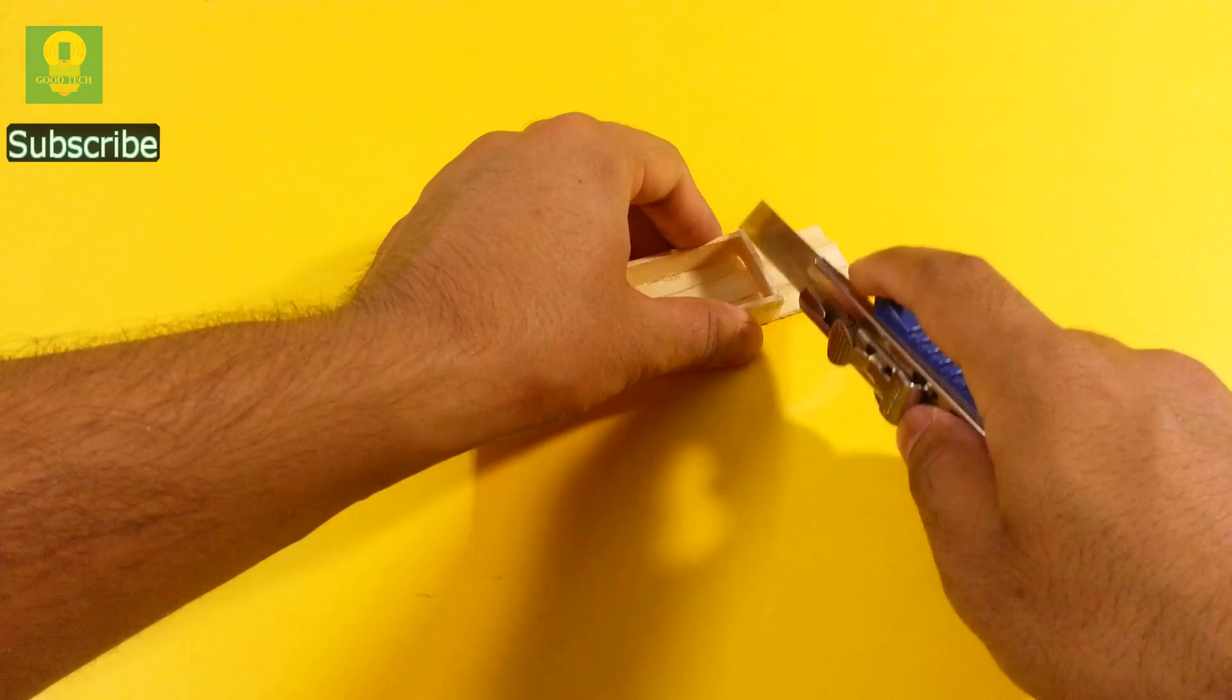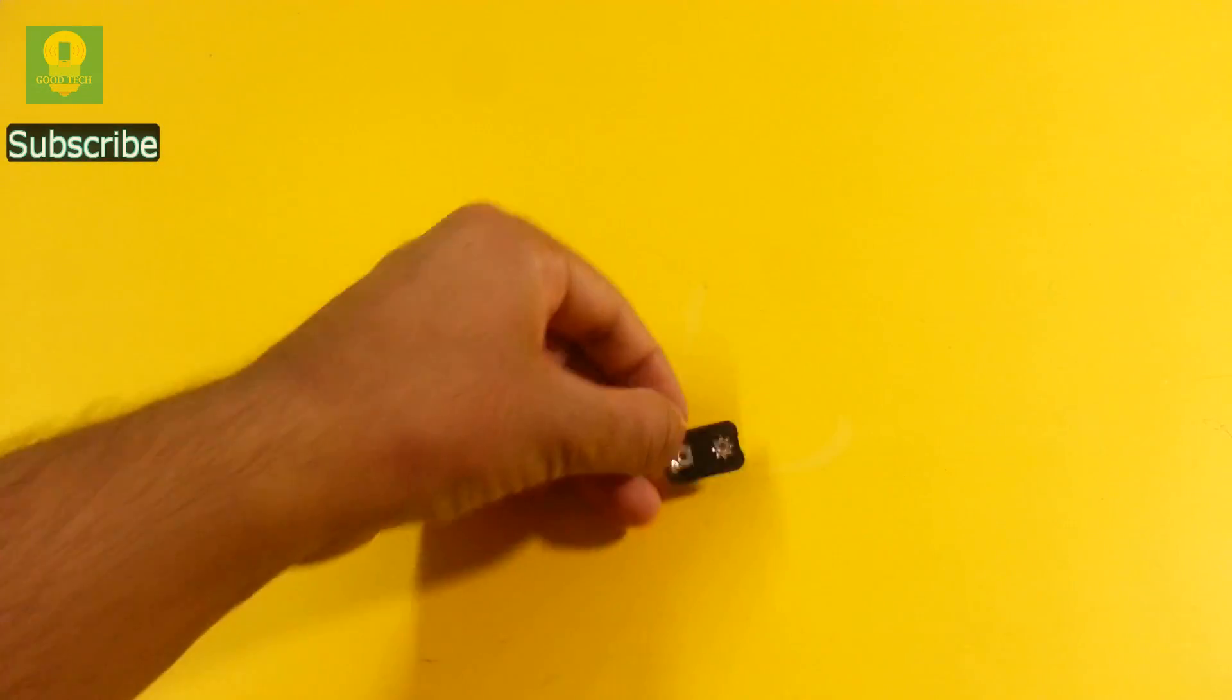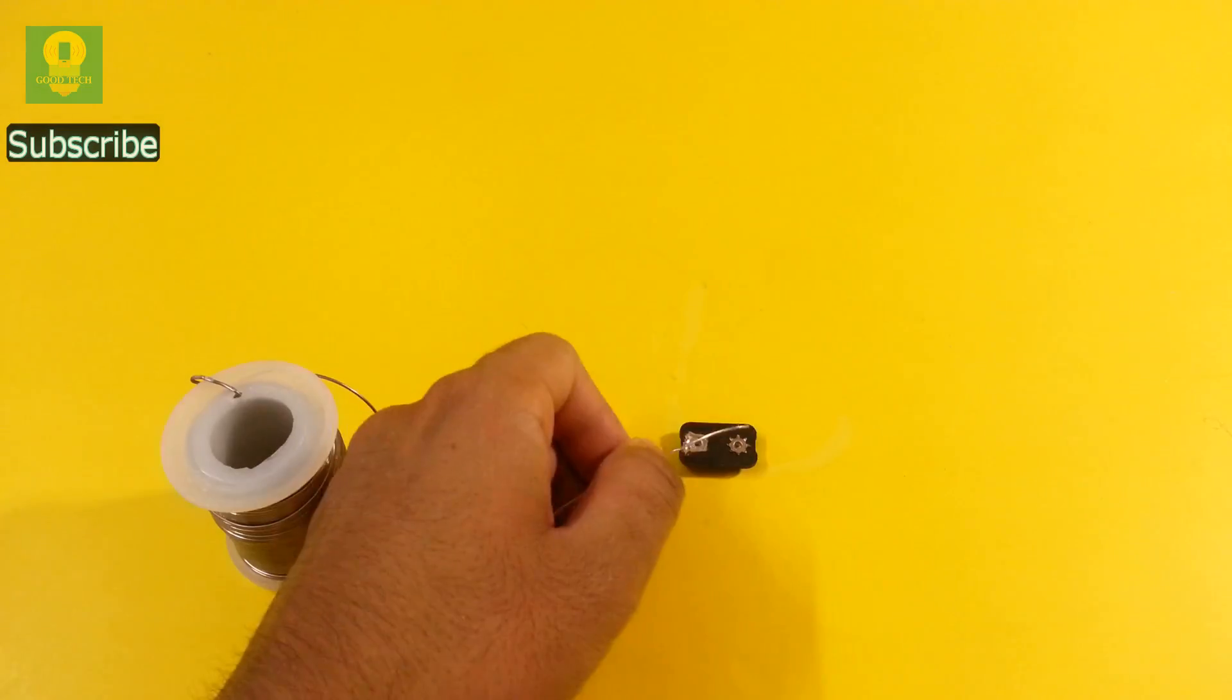Cut the extra length of the base carefully. Take the battery connector and fill some solder in the negative terminal.